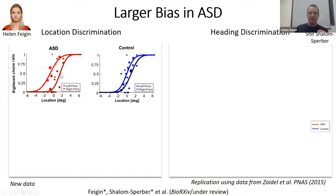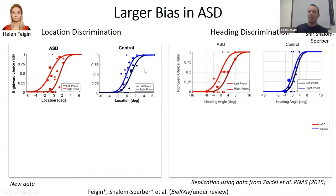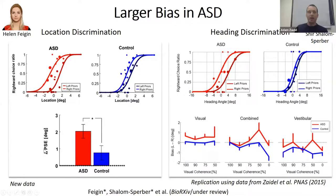Contrary to the hypothesis of reduced priors in autism, we found that people with autism have a very strong prior effect — even greater than controls. We see good separation between psychometric curves based on prior trials, and we see the same thing in the heading discrimination paradigm with two cohorts. When we calculate the PSE difference for autism versus controls in both cohorts, we see a significant difference — individuals with autism seem to be more affected by prior trials.